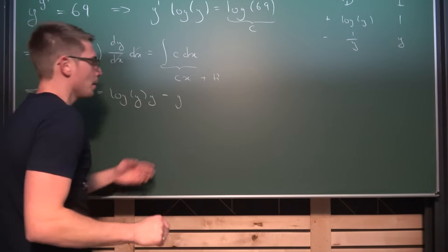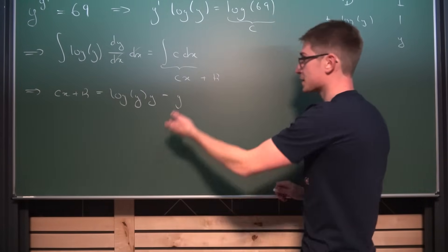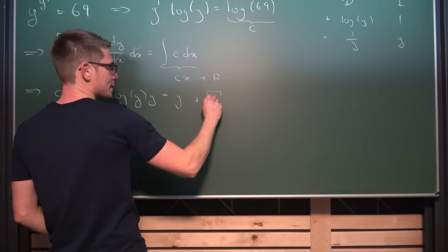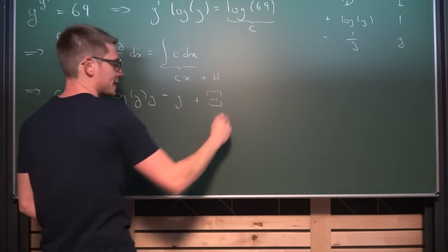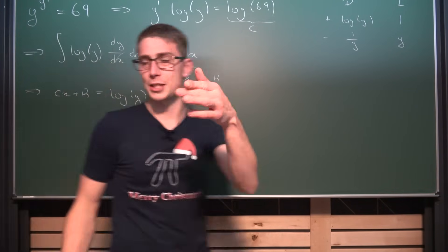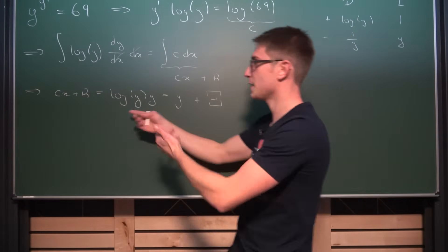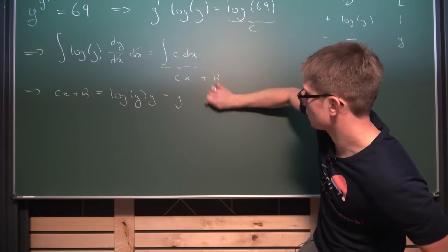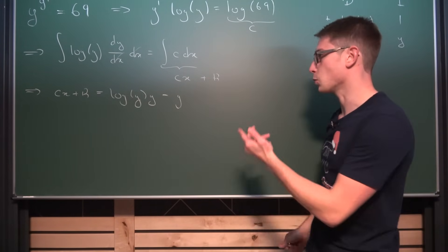So meaning what we're gonna get is that c times x plus some arbitrary constant kappa out of the real or complex numbers is equal to log of y times y minus the integral of 1 over y times y which is the integral of 1 which is just gonna end us up with y. Because we are integrating with respect to y. So minus y plus some arbitrary constant xi. But you can just subtract this constant on both sides absorbing it in the kappa.